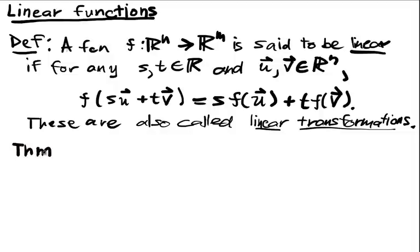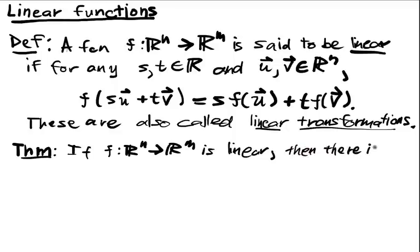Theorem: If f from R^n into R^m is linear, then there is an m by n matrix A such that f of x is equal to Ax for